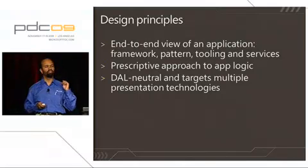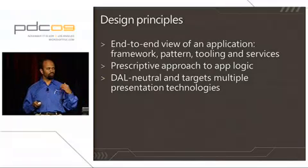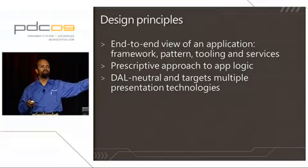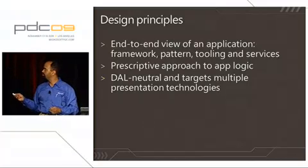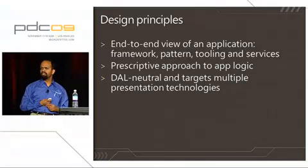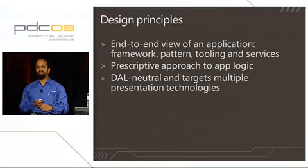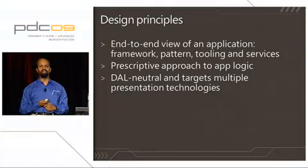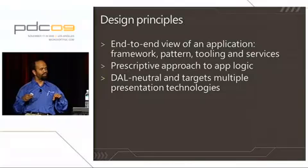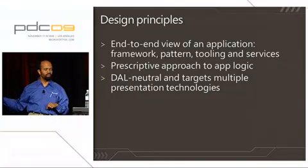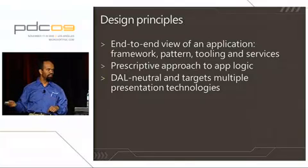The second key decision we made very early in the cycle was to be prescriptive. We've added a pattern on top of WCF services. With WCF, you can write your operations any which way you want — you still can. What RIA services does, or what the domain service part in RIA services does, is let you write it in a certain fashion that makes the rest of the framework just flow with it. We'll spend a lot of time on this pattern. The decision we made early on was also to not tie it to any specific data access layer. In my demo, I'm going to show it all working against NHibernate, just to drive the point home.